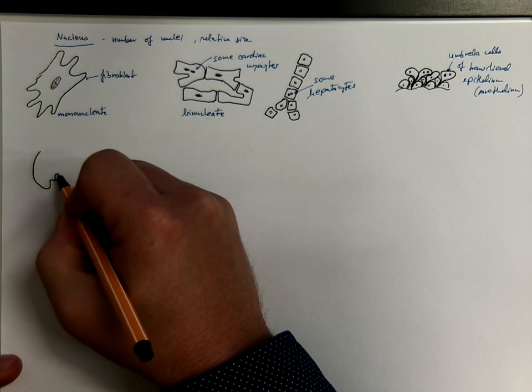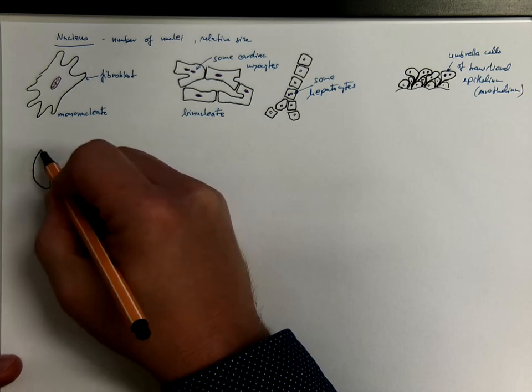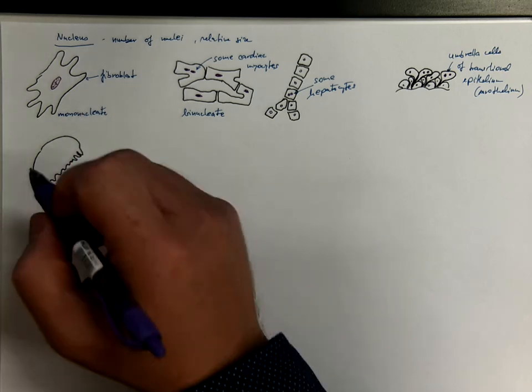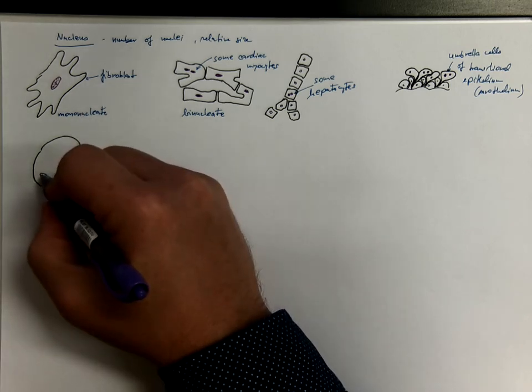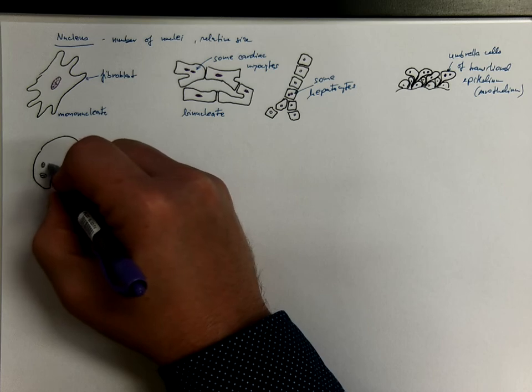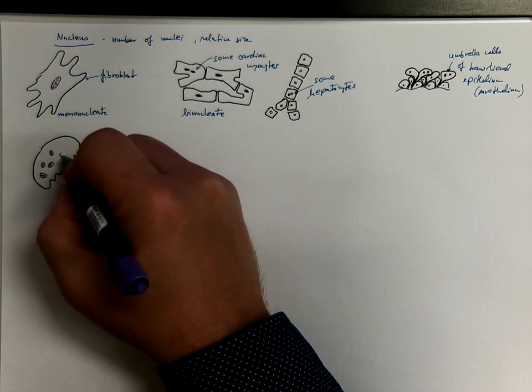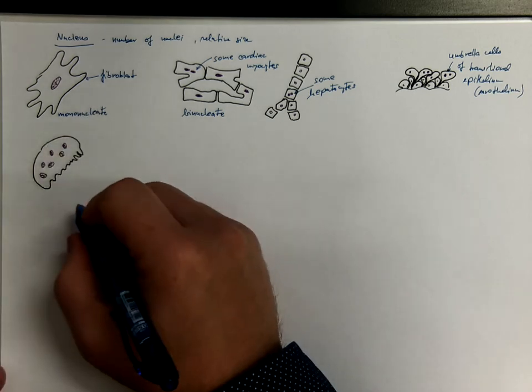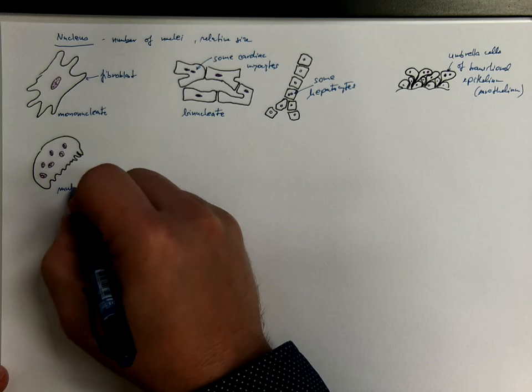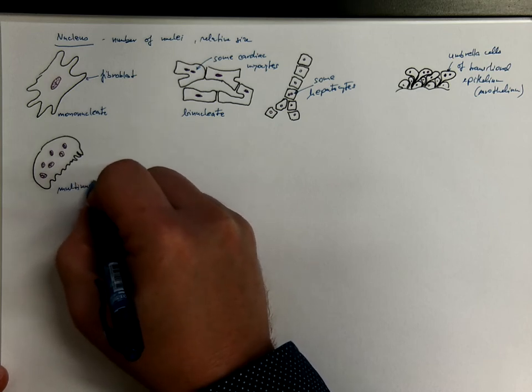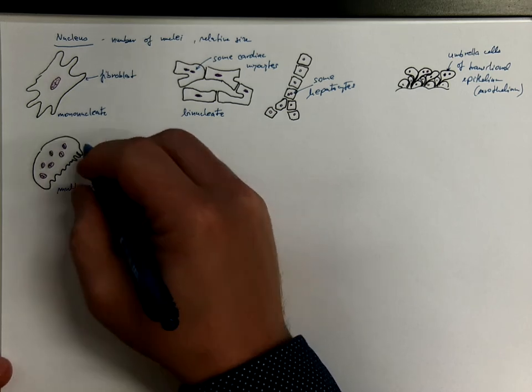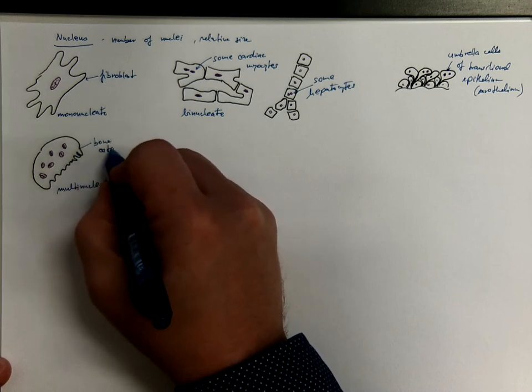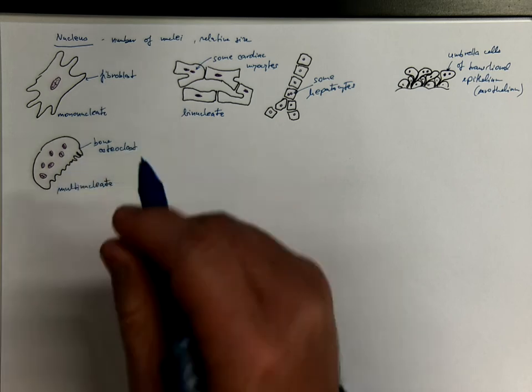A good example for this would be a multinucleated cell called osteoclast. It's a bone cell responsible for resorption of bone matrix. It's a special form of macrophages. So we got an example of multinucleated cell such as the bone osteoclast. It's resorbing bone matrix.